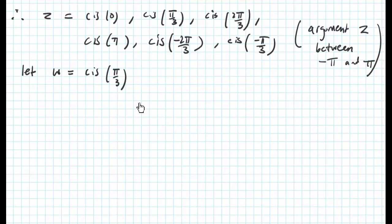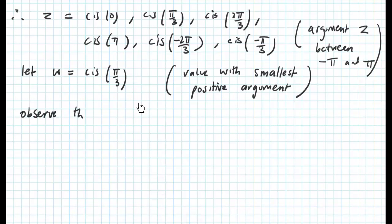If we let w equal cis pi on 3, then we can write our solutions in terms of w. We always represent w as the solution with the smallest positive argument. In this case the smallest positive argument is pi on 3.